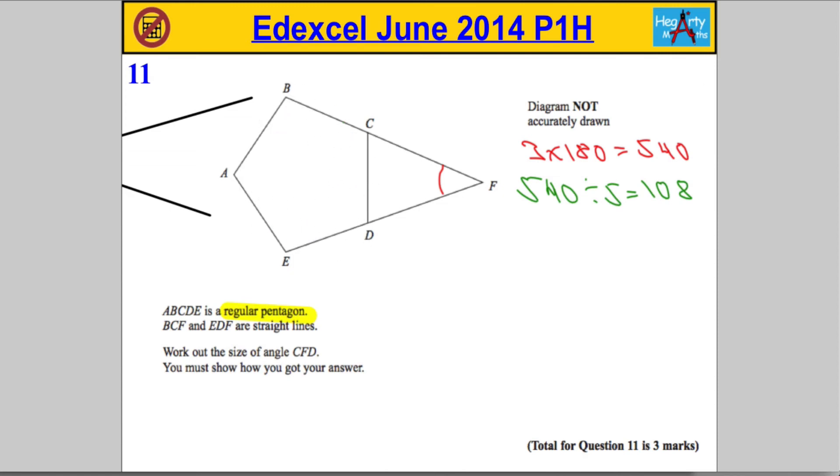So using my eraser, I'm just going to mark it in now. I know that this is 108, and this is also 108 here. In fact, every angle in this pentagon will be 108.